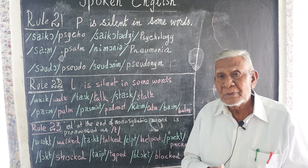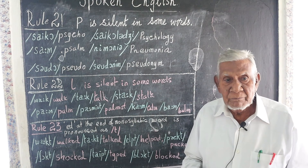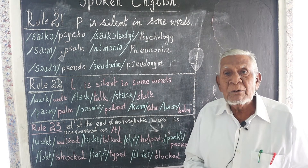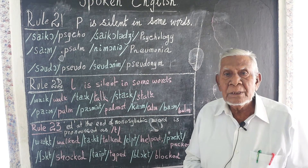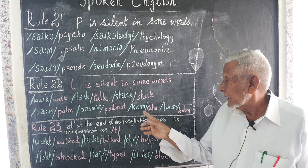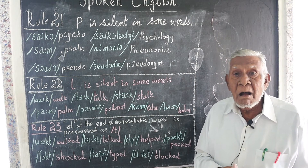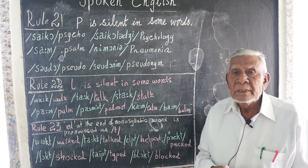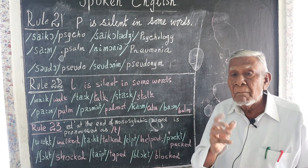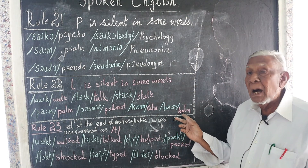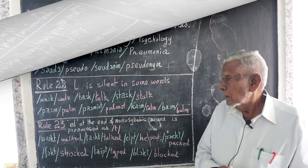Palmist — P-A-L-M-I-S-T. An astrologer who tells about your future by reading the lines on your palm is called a palmist. Then calm — C-A-L-M. The atmosphere in the villages is calm. Balm — B-A-L-M. Apply the balm for the headache.